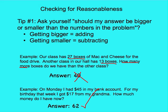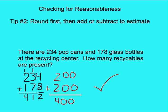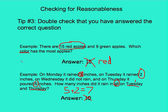When you're checking for reasonableness, you have three things to do. First, ask yourself: should the answer be bigger or smaller than the numbers in the problem? You can visualize it with barcode diagrams or draw a picture, but you need to know if you're getting bigger or smaller — if bigger, you're adding; if smaller, you're subtracting. Second, once you know the operation, round each of your numbers and do that operation to find an estimate, so you have something to compare against to catch simple mistakes. Finally, reread the question and make sure you answered the correct thing — if it's asking for a color, give a color word; if it's asking for a subset, pull out only the correct information. As you're solving word problems, always check: is my answer reasonable?